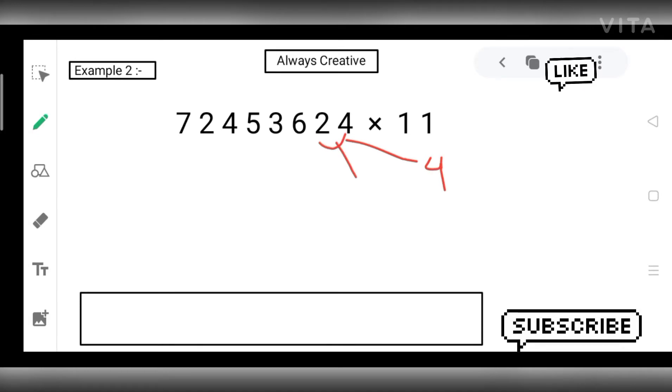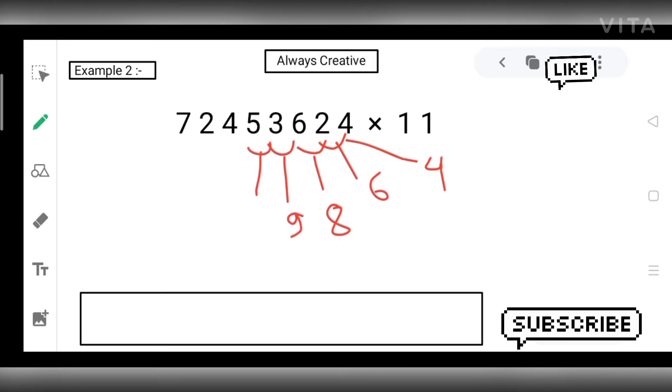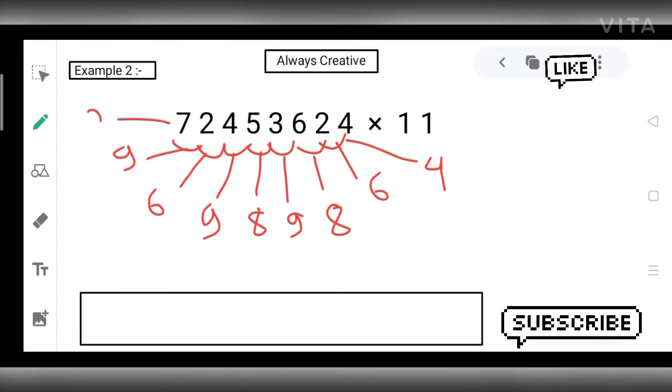6 plus 2 is 8, 6 plus 3 is 9, 5 plus 3 is 8, 5 plus 4 is 9, 4 plus 2 is 6, 7 plus 2 is 9, then 7.